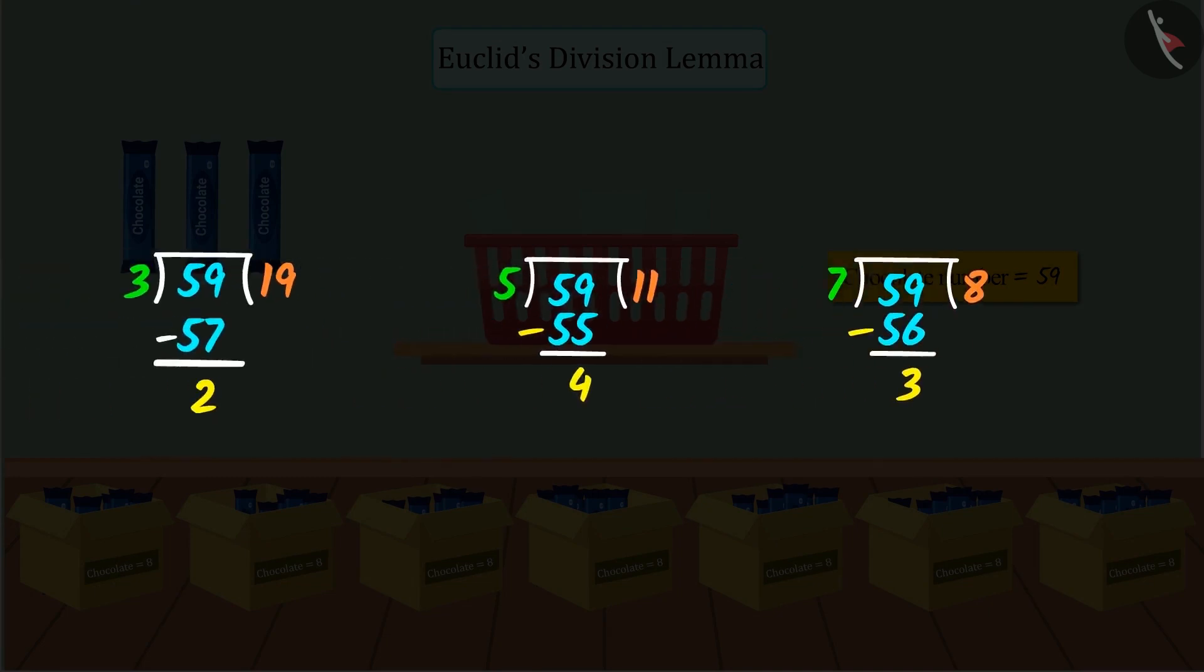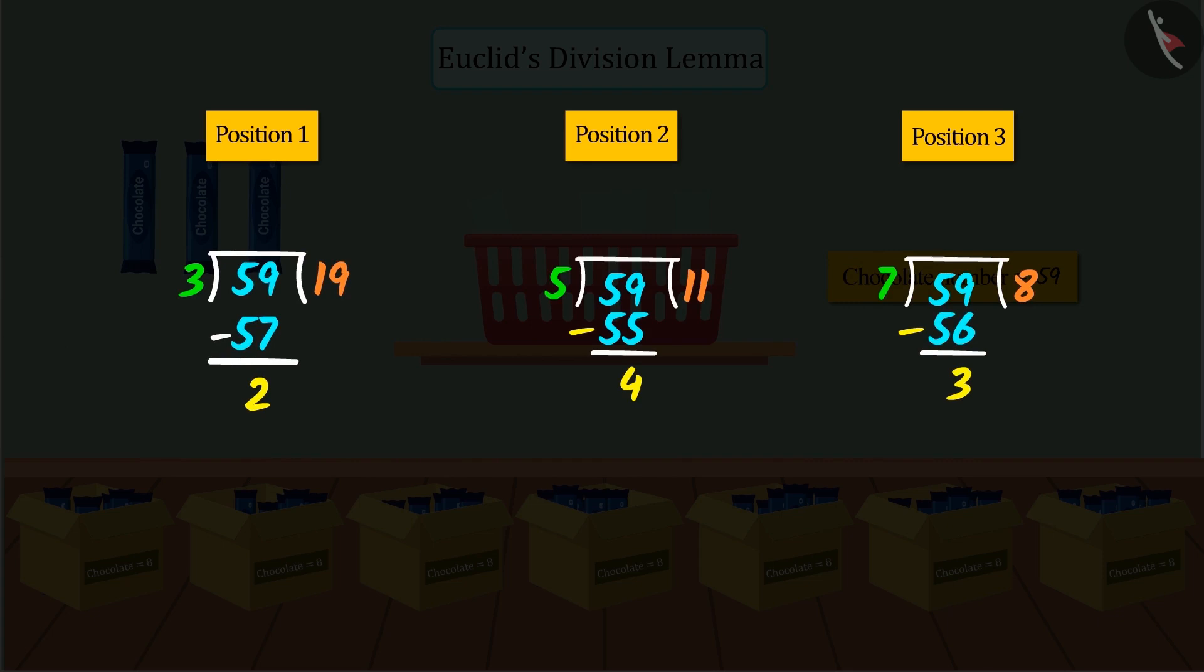In the above 3 situations, we saw that both dividend and divisor are positive integers. Where on dividing the dividend 59 by divisor 3, 5, 7, we got remainders 2, 4, and 3 respectively.